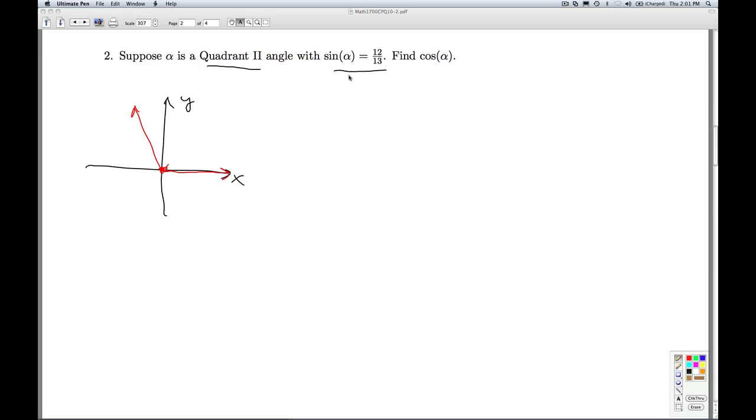What else are we given? We're given the sine of alpha is 12 thirteenths. So that means if I superimpose the unit circle, all we know is, see unit circle here, the highest we can go is one. 12 thirteenths is pretty darn close to that. Okay, so this is all we know about alpha.